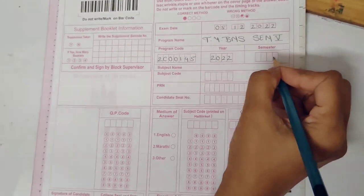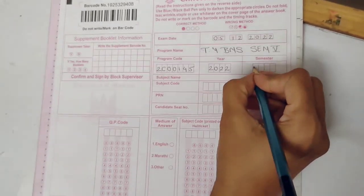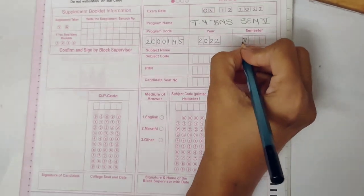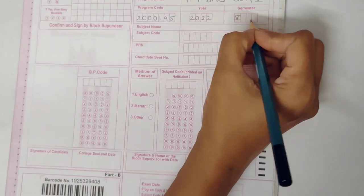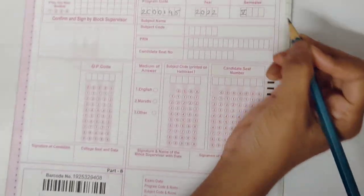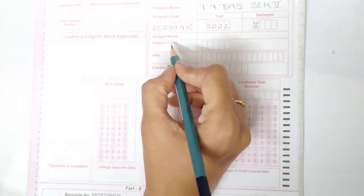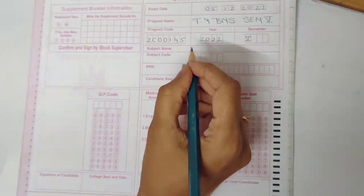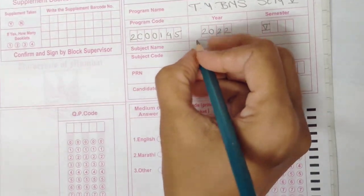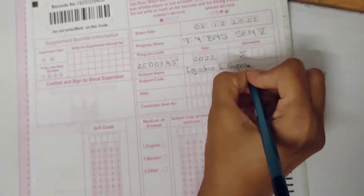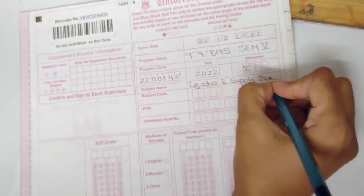For the semester field, whichever semester exam you are appearing for, you have to write it in Roman numerals. If it is Sem 5, write V; if it is Sem 6, you can add I. Then you have the subject name — whichever paper you are appearing for that day, you have to write the paper name. For example, 'Logistics and Supply Chain Management'.